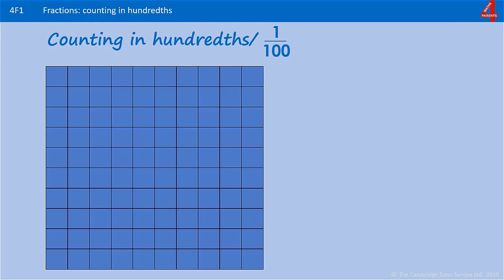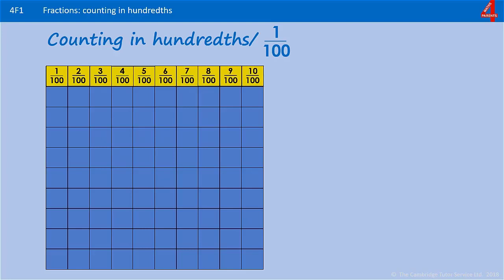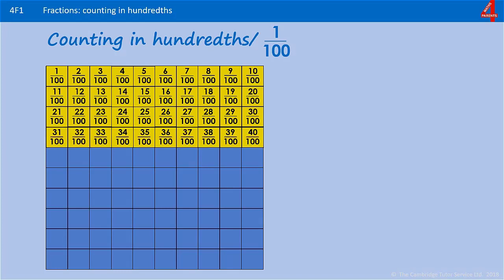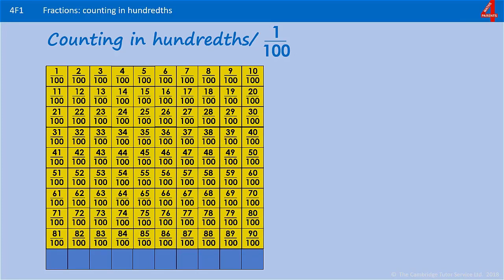My favourite way of looking at hundredths is to use a hundred square. The blue square here has been divided equally into a hundred pieces. Each one of those squares is one hundredth of the whole blue square. If we fill a whole row, we have ten hundredths. Every time we fill a row, we've added on another ten hundredths. When we get to the last line — starting with 91 hundredths up to 99 hundredths — we add one more and we've filled the whole thing: one hundred over a hundred, one hundred hundredths, which is one.